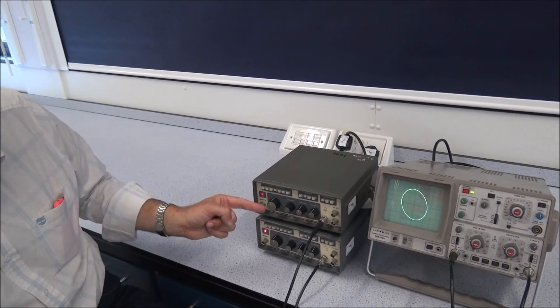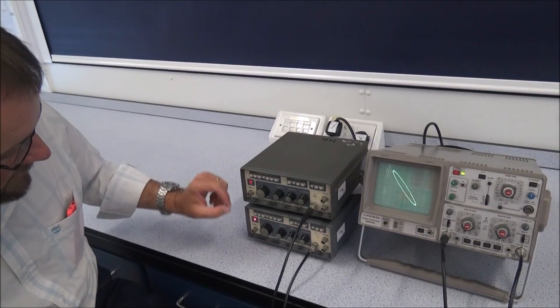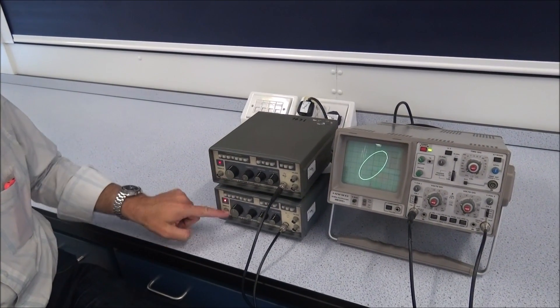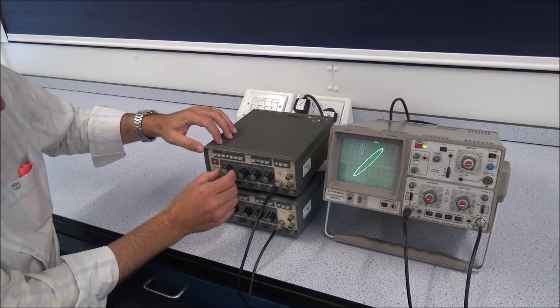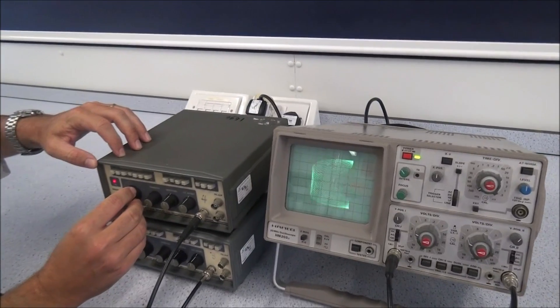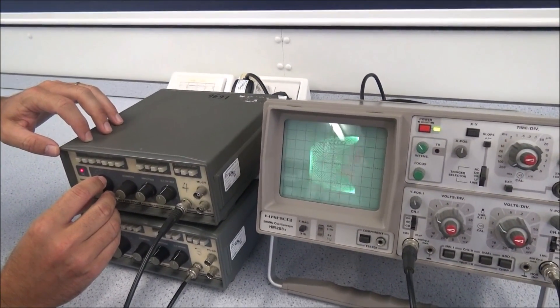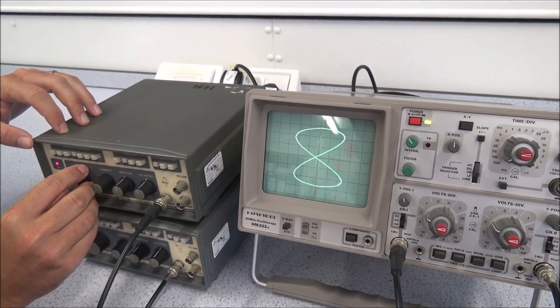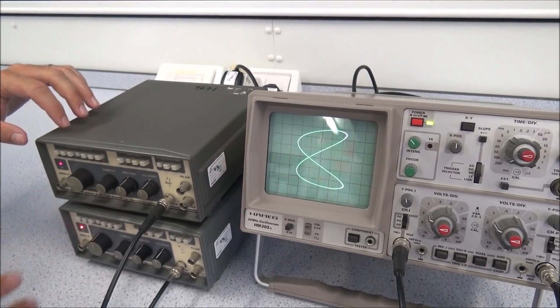You can then start to try different ratios of frequencies. So if I make, if I turn one of these down to half a kilohertz, so I'll leave this one at one kilohertz and turn that one down to half a kilohertz. It's a bit tricky to, on this signal generator at least, to get it exactly right. But with a bit of trial and error, we can hopefully get it. There we go. That's nice.